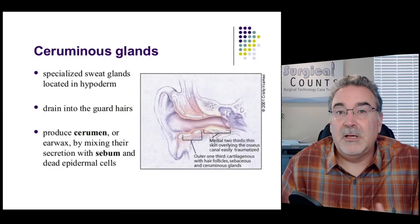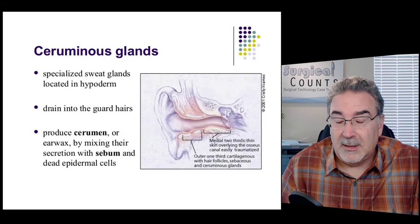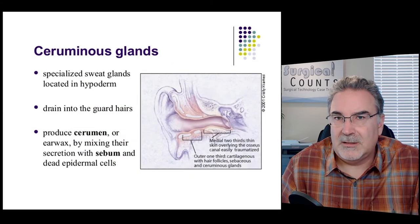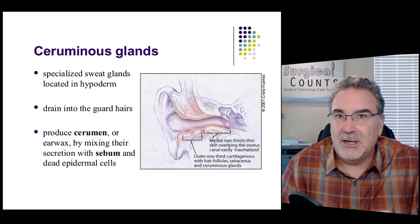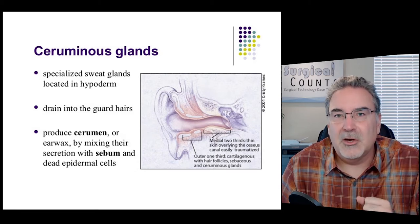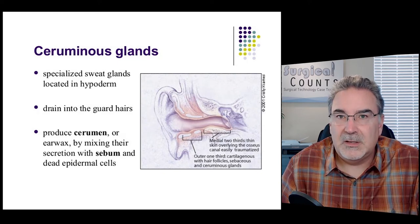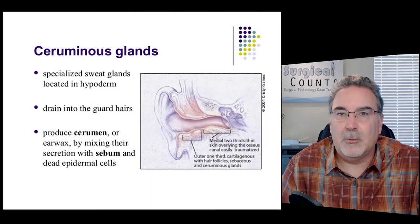In our ear canal, we have apocrine glands known as ceruminous glands. These work with sebaceous glands to produce a mixture that forms earwax. Another name for earwax is cerumen, and ceruminous glands help produce it.